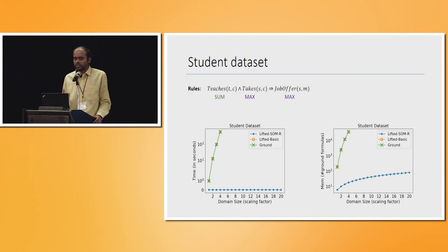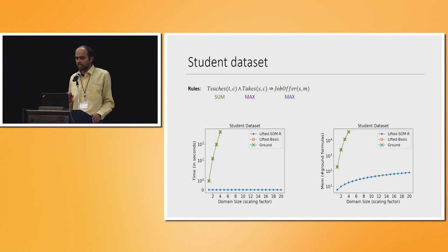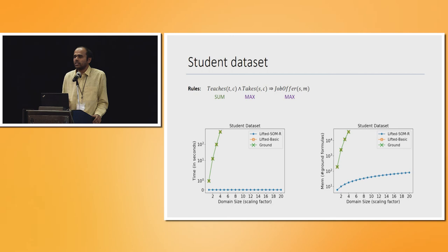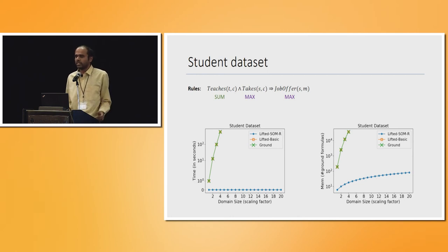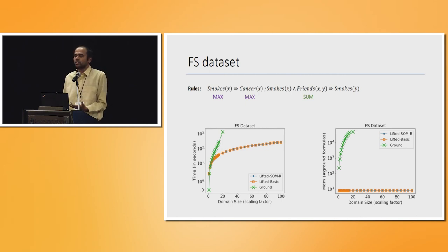For the student dataset — where takes and job-offer are max predicates and teaches is a sum predicate — our SOM R algorithm (blue curve) achieves almost constant time performance, while lifted basic gives no advantage over ground inference. Both y-axes are on log scale. In terms of memory, we scale much better. For friends-and-smokers, lifted basic and our approach perform identically, meaning SOM R is not additionally helping, but both outperform ground inference in time and memory.